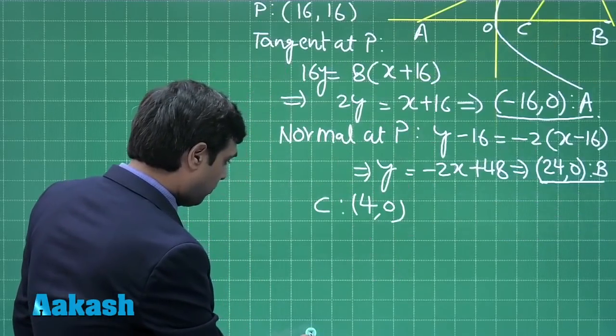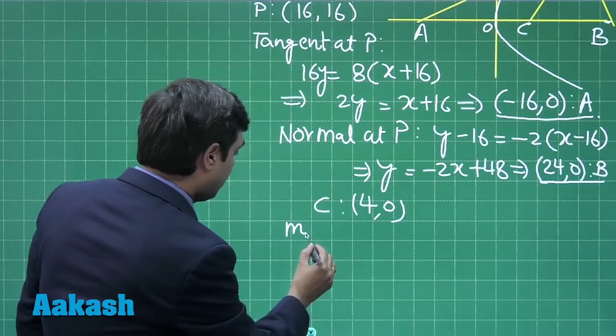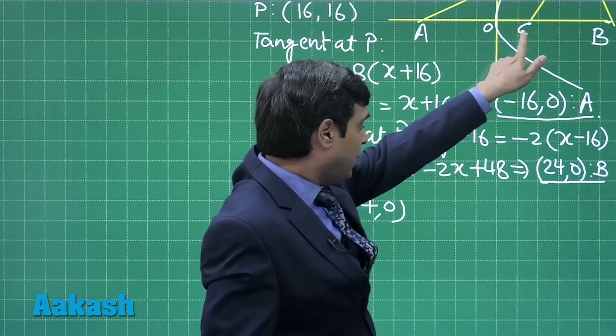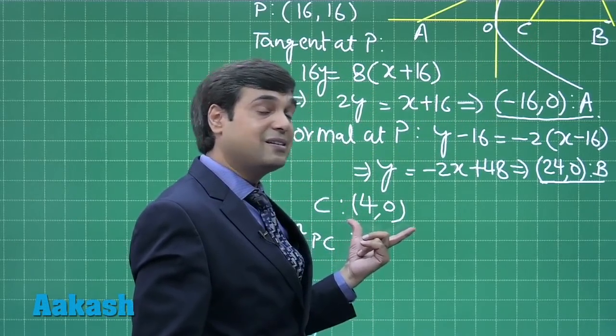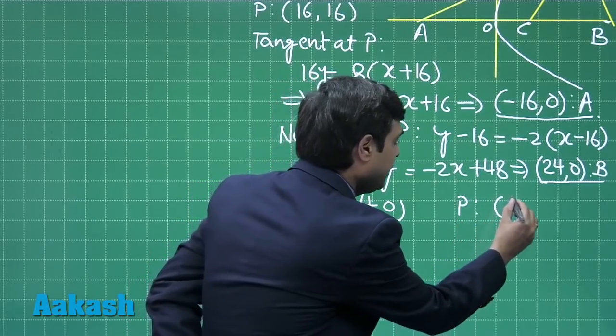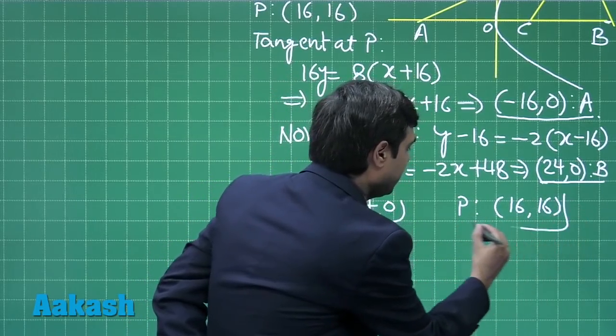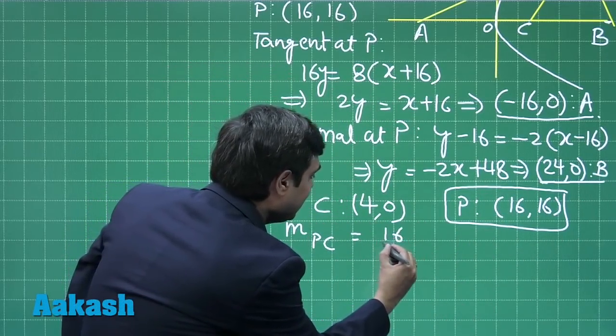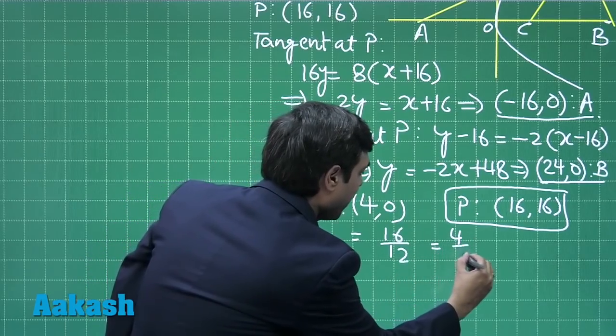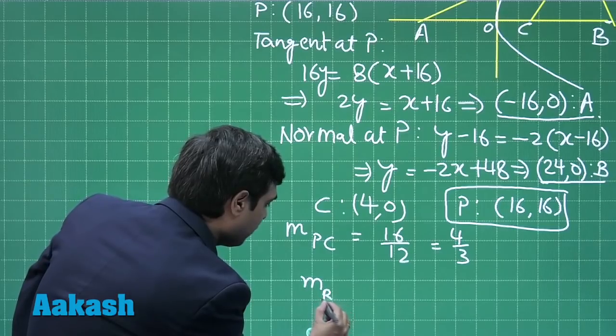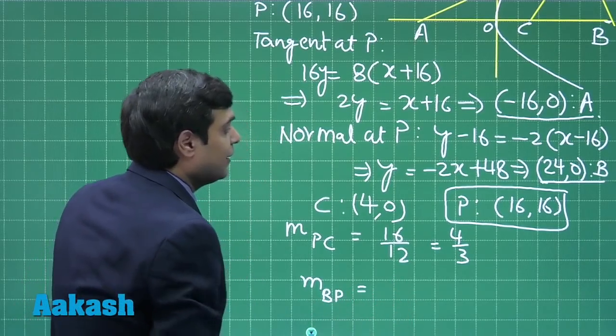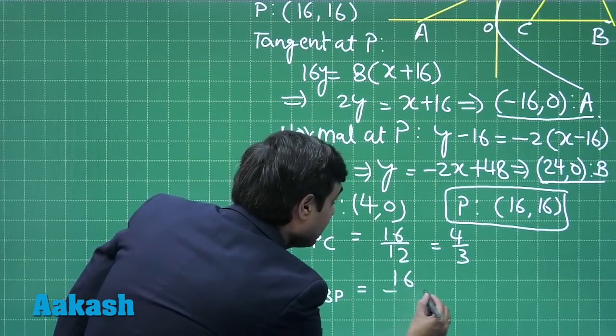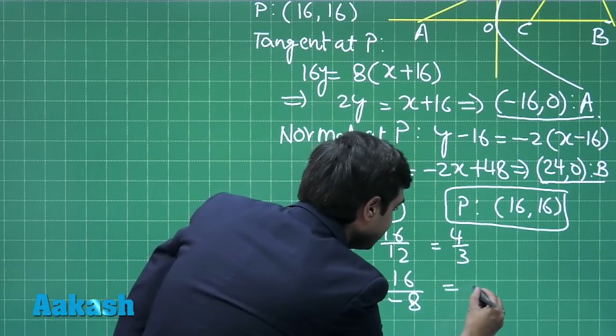Let us try to find the slope of PC and PB. m_PC, that is slope of line PC. C point that is (4, 0), P point that is (16, 16). From here we have slope of PC as 16/12 or 4/3. Slope of BP, with the help of these two points we get 16 upon -8, that is -2.